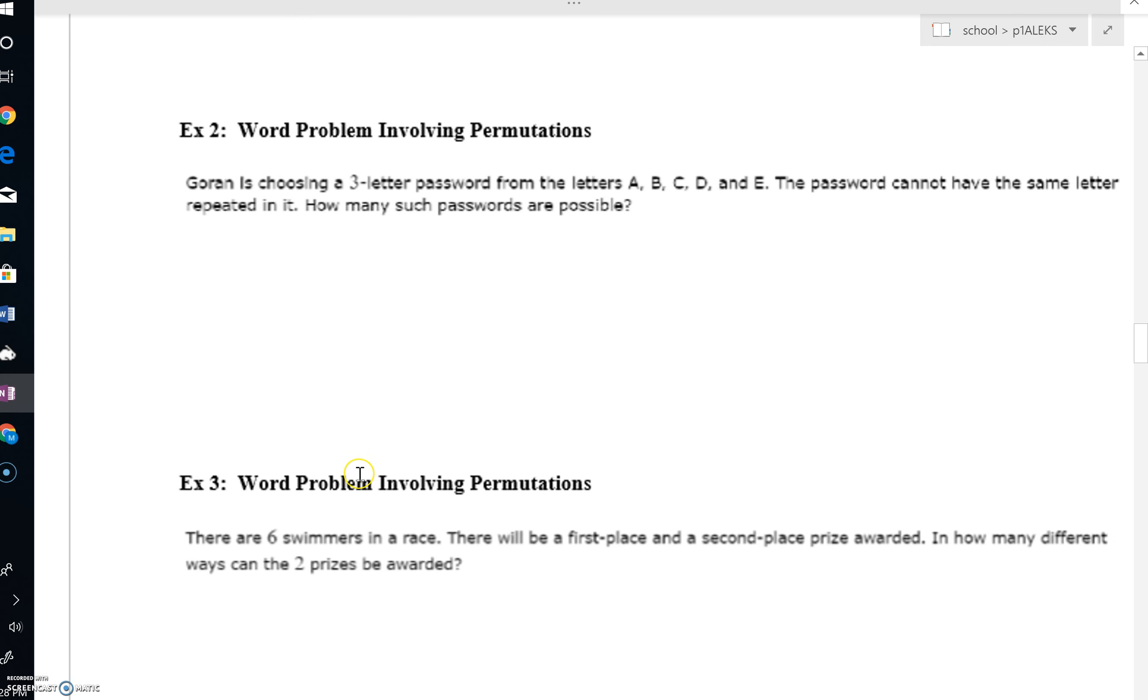Now, for the next examples, we're going to deal with word problems involving permutations. Like I said, permutations are where order matters. It matters what comes first, what comes second. And we're going to find a way to count the number of ways we could gather something or have groups of something where order matters. So it says Gorin is choosing a three-letter password. And you can see order is going to matter in this password, what letter comes first. And the password cannot have the same letter repeated.